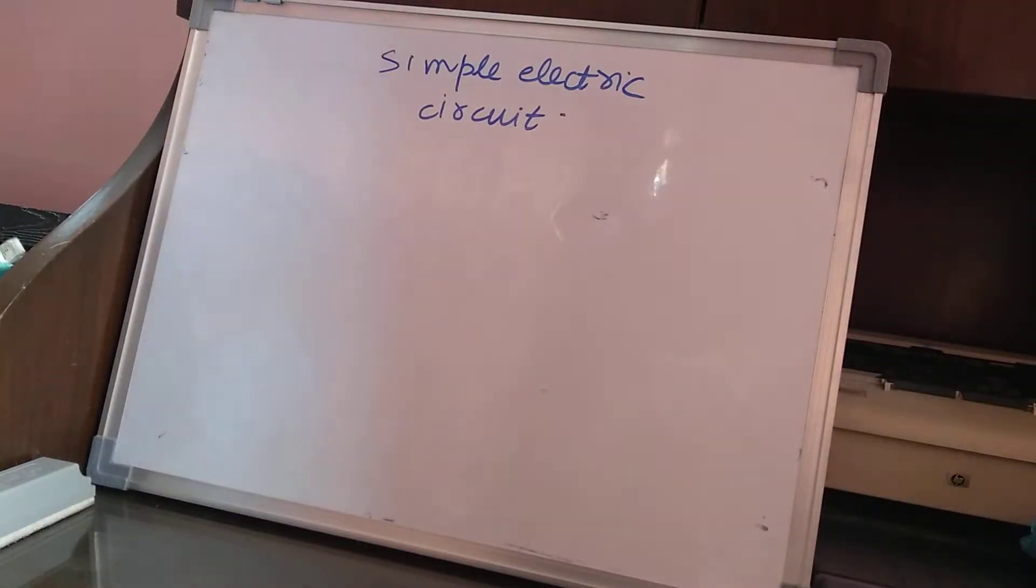Now we understand the concept of simple electric circuit. We already know that any metallic wire is able to carry electric current. It is able to conduct electric current because it has charge carriers which are in the form of free electrons.